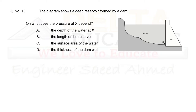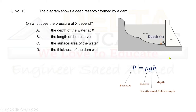Question 13: A deep reservoir is formed by a dam. On what does the pressure X depend? Pressure exerted by a liquid is given by P = ρgh, where ρ is density, g is gravitational field strength, and h is the depth from the liquid surface to the point. Option A — the depth of the water at X — is correct. Correct option is A.